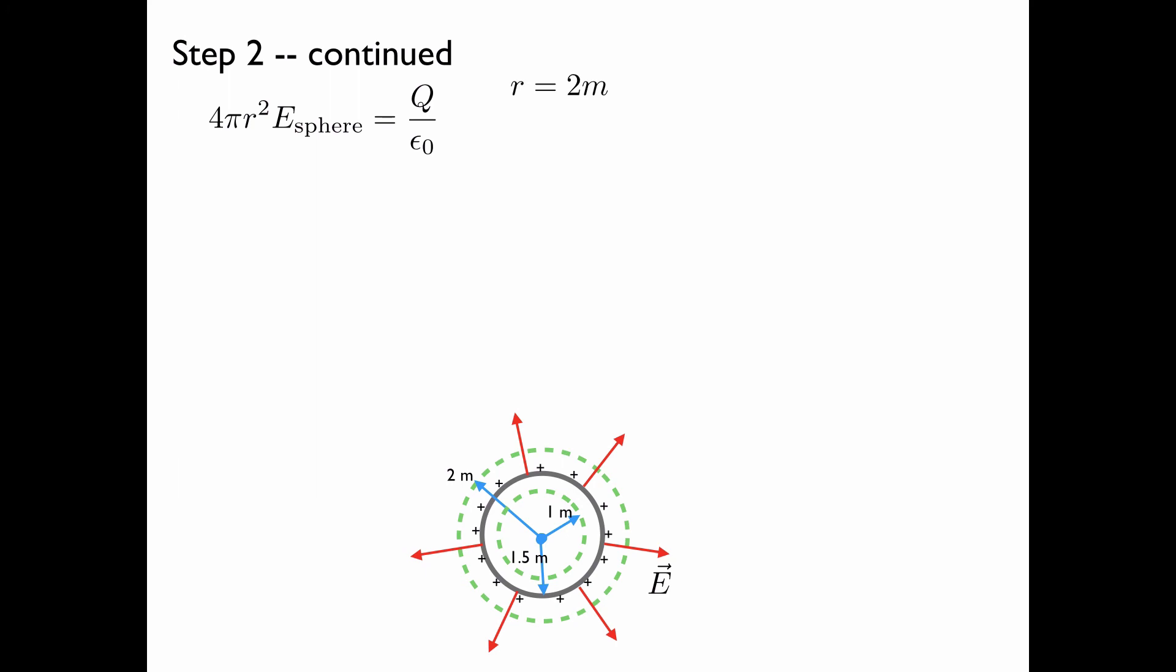We know that r is equal to 2 meters, because this is the sphere on which we wish to find the electric field. We know that Q is equal to 8 millicoulomb, and the permittivity of free space is equal to 8.85 times 10 to the negative 12 farads per meter.